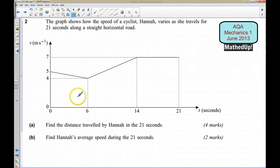So we can see that this is a velocity time graph. For the first part we want to find the distance travelled by Hannah in the 21 seconds. Well because it's a velocity time graph we want to work out the area under the graph.